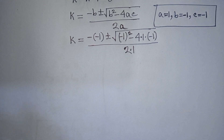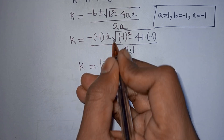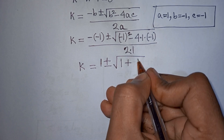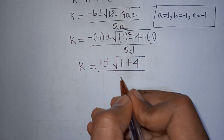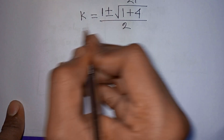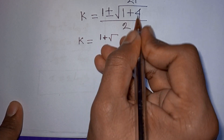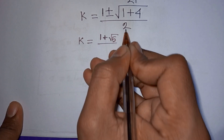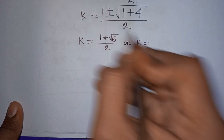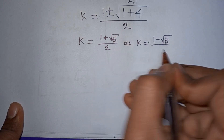Substituting in: k equals negative times negative 1, which is positive 1, plus or minus square root of negative 1 squared minus 4 times 1 times negative 1, which gives 1 plus 4 equals 5, all divided by 2. So we have two cases: k equals (1 plus square root of 5) divided by 2, or k equals (1 minus square root of 5) divided by 2.